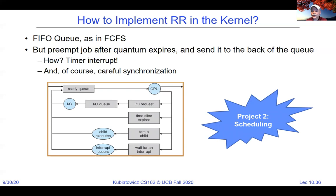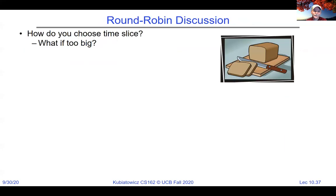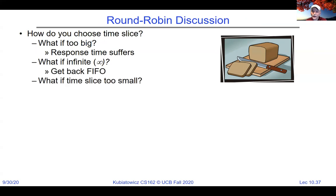How do you choose the time slice? If it's too large, response time suffers. At infinity, we get back to FIFO. If it's too small, throughput suffers because context switching overhead dominates. There's an inherent tradeoff between responsiveness and throughput when choosing the quantum size.